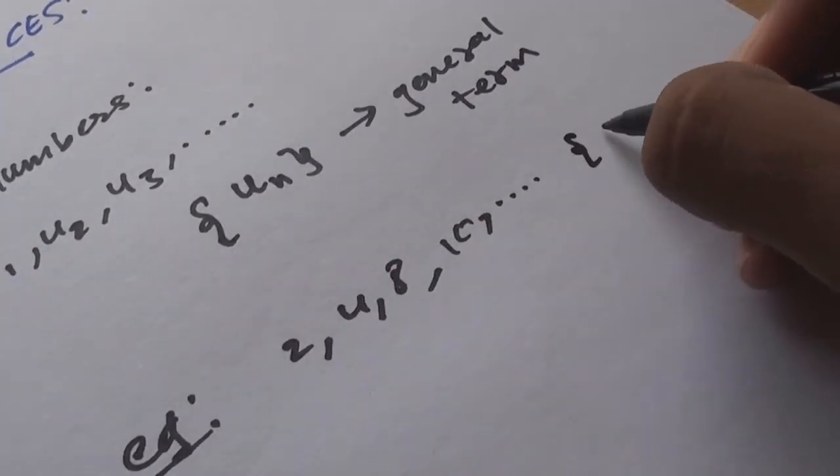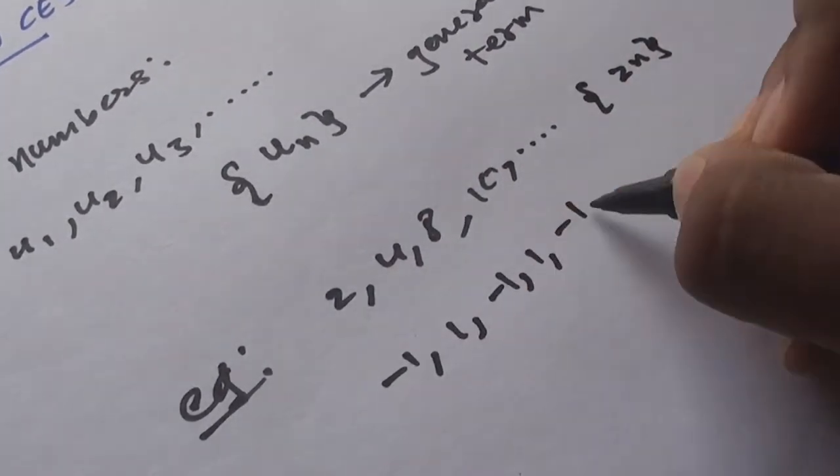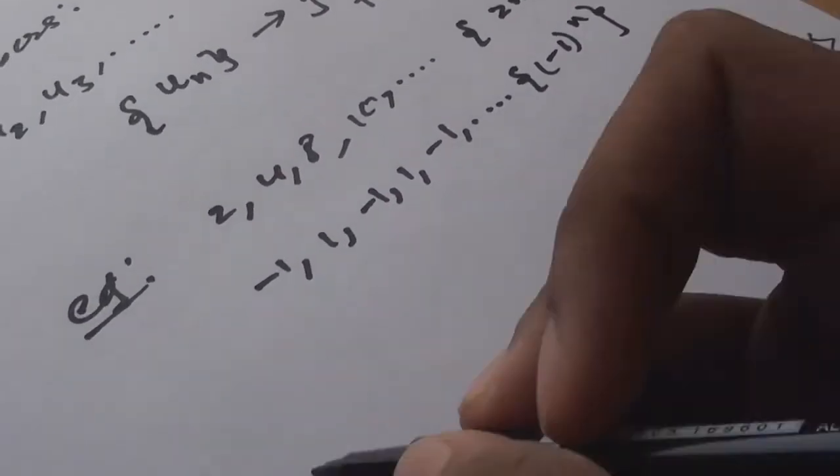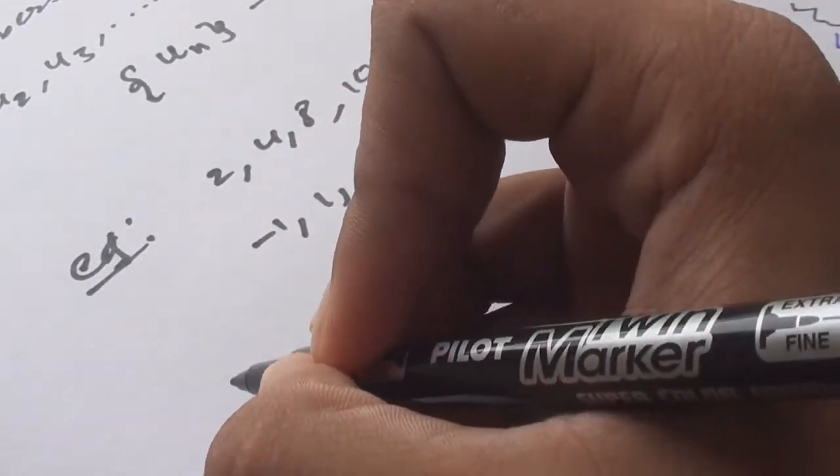For example, 2, 4, 8, 10, and so on, where the general term is {2n}. Or, -1, 1, -1, 1, -1, and so on, where the general term is {(-1)^n}.